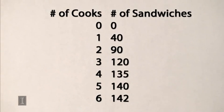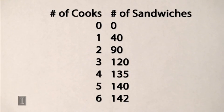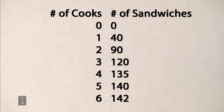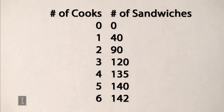Suppose this is the production function for barbecue sandwiches for Black Dog. When they have no cooks, they have no sandwiches. With one cook, they can make a total of 40 sandwiches. With two cooks, they have 90 sandwiches — so the first cook brought 40 additional sandwiches and the second cook added 50. The third cook increases output to 120, which is 30 more. The fourth cook brings it to 135, that's 15 more. The fifth cook brings it to 140, which is 5 more. And the sixth cook increases output to 142, which is only 2 more.